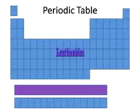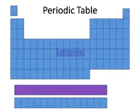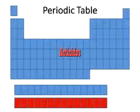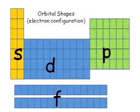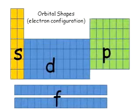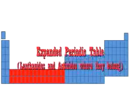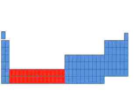The lanthanides and actinides are out on that little island at the bottom of the periodic table. That whole group is the F block — they're stuck between group 3 and group 4, but placing them there would make the periodic table really, really wide.